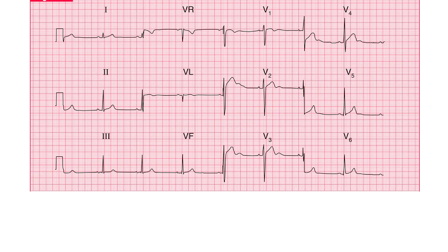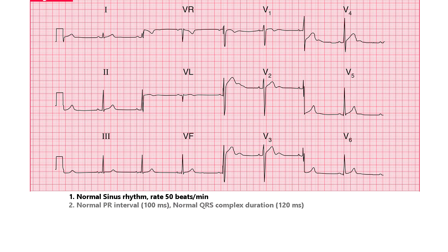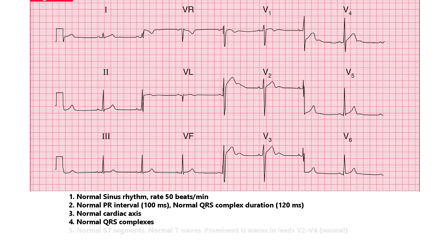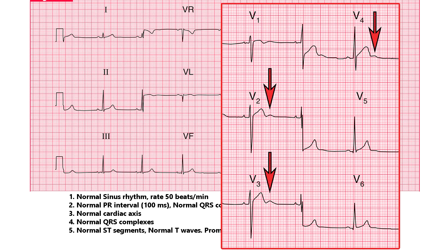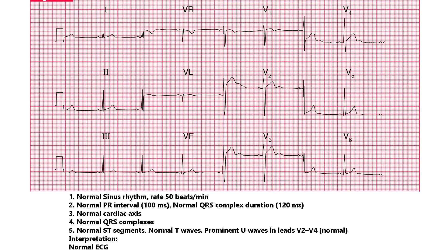Here is a variant of a normal ECG. We will report it as: normal sinus rhythm, rate 50 beats per minute, normal PR interval, normal QRS complex duration, normal cardiac axis, normal QRS complexes, normal ST segments, normal T waves. Prominent U waves in leads V2 to V4. Interpretation: Normal ECG.